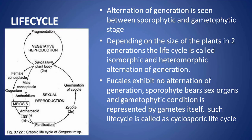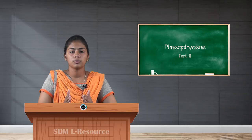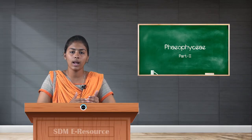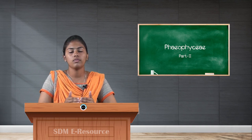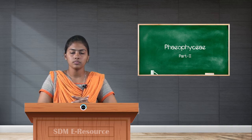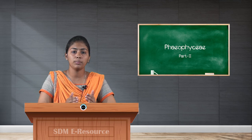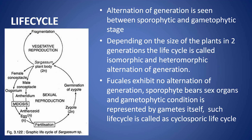Coming to the life cycle: the Phaeophyceae life cycle mainly involves alternation of generations. Two phases — the sporophytic phase and the gametophytic phase — alternate in the life cycle. The sporophytic generation is n-ploid (haploid thallus with a single set of chromosomes), while the gametophytic generation has a 2n-ploid thallus. Alternation of generation can be classified into two types depending on the size of the plants.